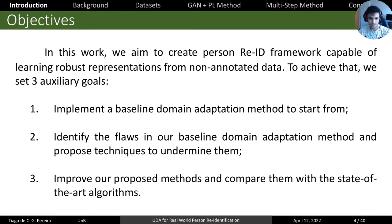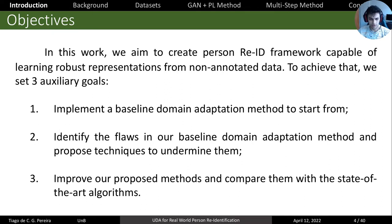To achieve that, we set three auxiliary goals as our objectives. First, we implemented a baseline to understand how domain adaptation works for Person Re-Identification. Then, we identified some flaws in our baseline and proposed techniques to address them. Finally, we improved our proposed methods and compared them with state-of-the-art algorithms, to see if we achieved our final goal of proposing something competitive with the state-of-the-art.